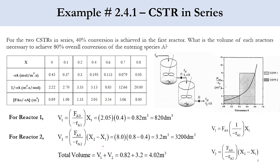Now let's solve the numerical example from lectures 5 and 6. Instead of a single reactor giving 80% conversion, we divide into two CSTRs: the first gives 40% conversion and the second gives 40% to 80%. For V1: FA0 / (-rA1) at X1 = 40% corresponds to 2.05, so V1 = 2.05 × 0.4 = 0.82 m³ (820 dm³).